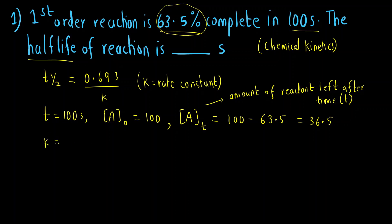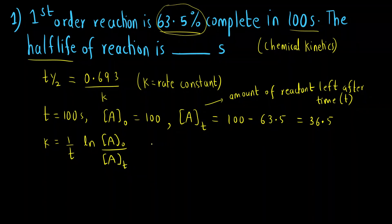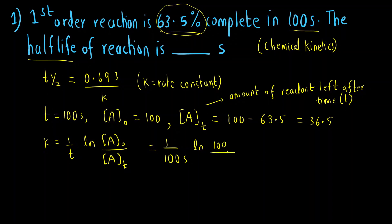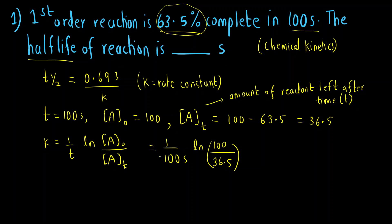The formula for first order kinetics is K = (1/T) × ln(A₀/Aₜ). K = (1/100) × ln(100/36.5). If you solve this, the final answer for the rate constant will be 0.01 per second.